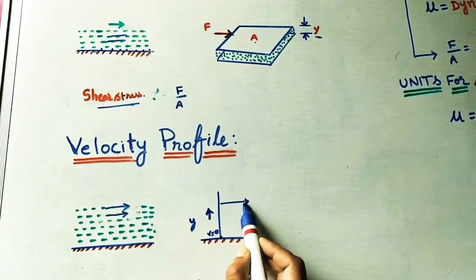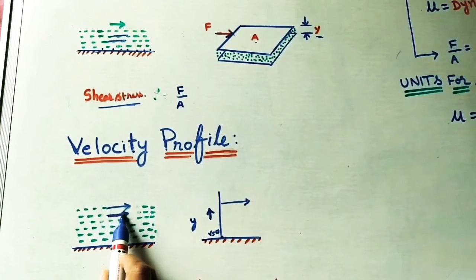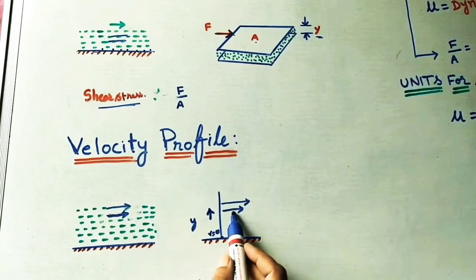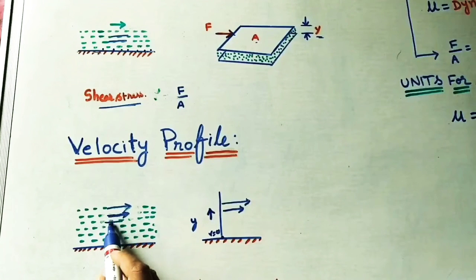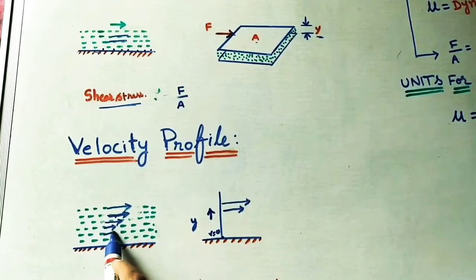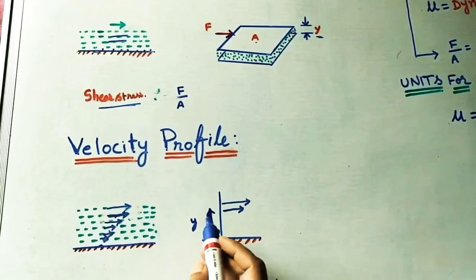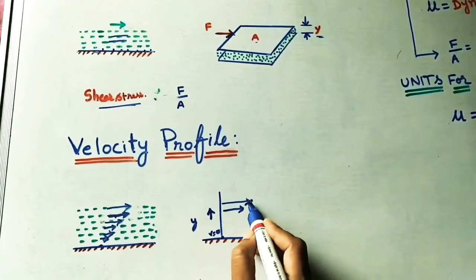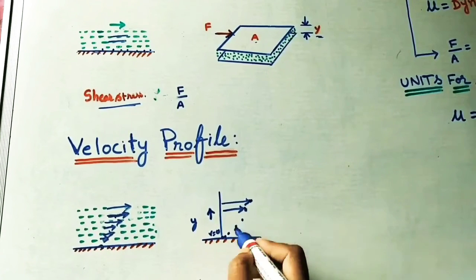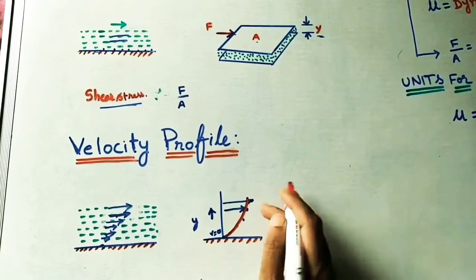One layer is moving at a higher velocity — velocity is marked on the x-axis. The adjacent layer has some lesser velocity. It has less velocity because the first layer is offering resistance on it due to cohesive forces. Marking velocity values at each layer point and joining all these points gives the velocity profile, which shows how velocity is changing.